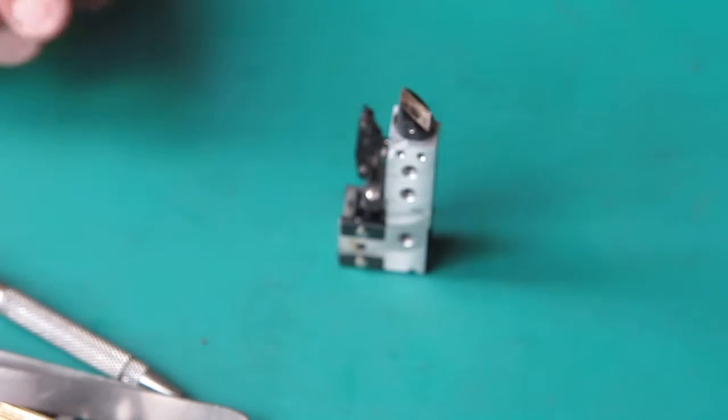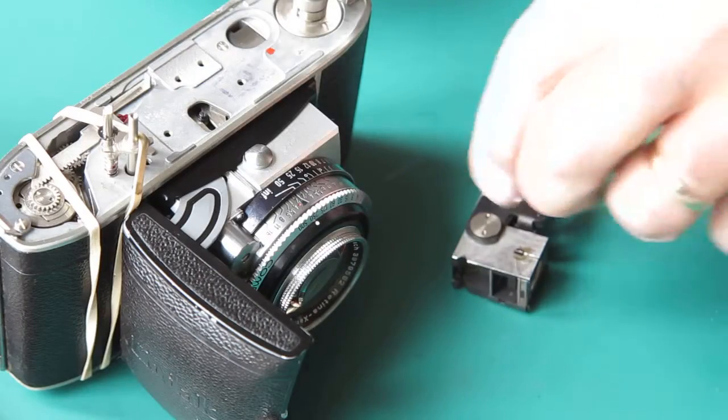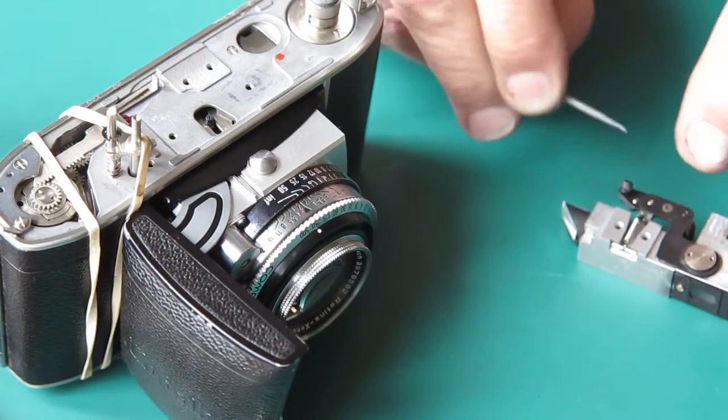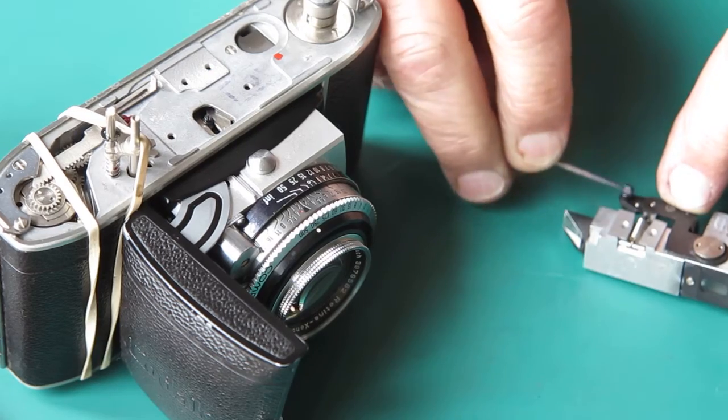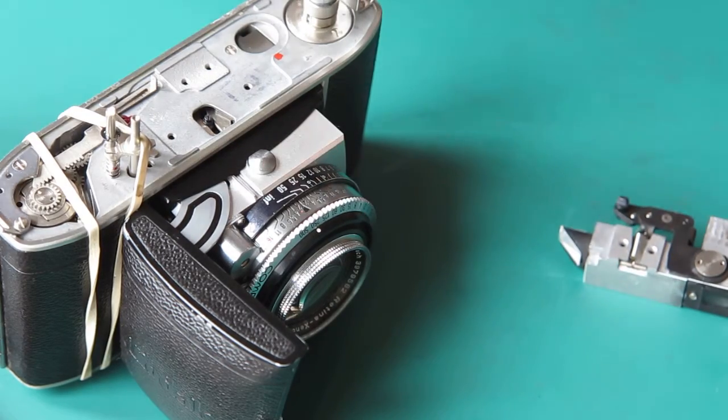Well, that rangefinder is very good and that's ready to go back on the camera body. I'll put a wipe of molybdenum on the cam on the front of that rangefinder where it couples to the camera.